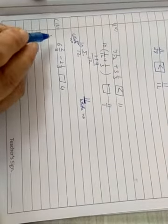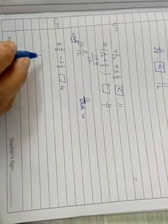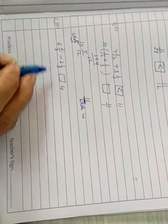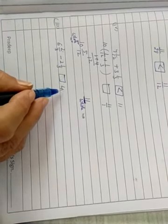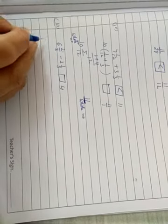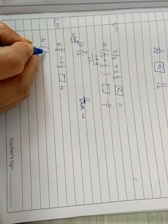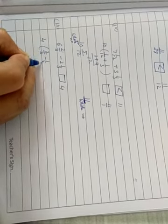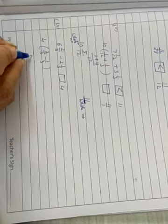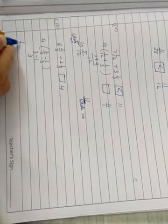Now, third part, same. 6 whole 2 upon 3 minus 2 whole 1 upon 3. Compare by 4. First, you will do this, 6 minus 2, 4. Now in bracket, 2 upon 3 minus 1 upon 3. Same denominator, same LCM. 3 ones are 3, 2 minus 1. 4 whole 1 upon 3.